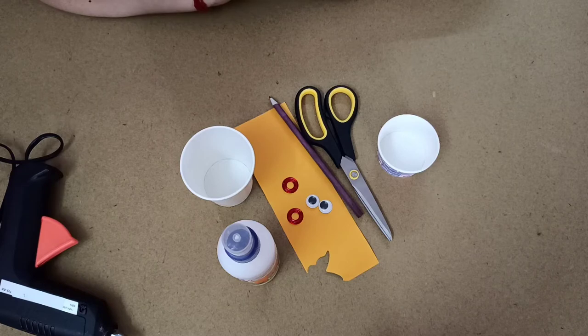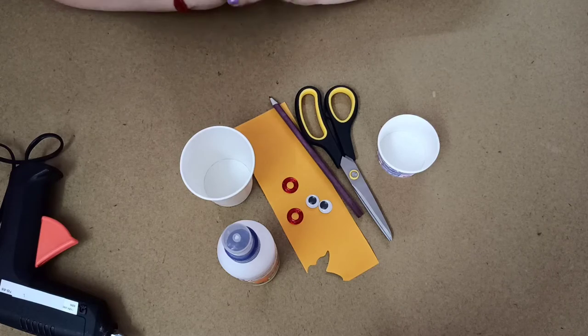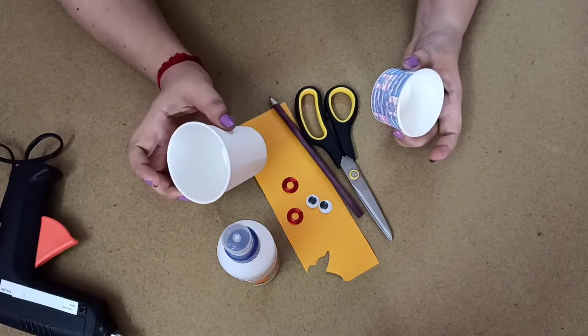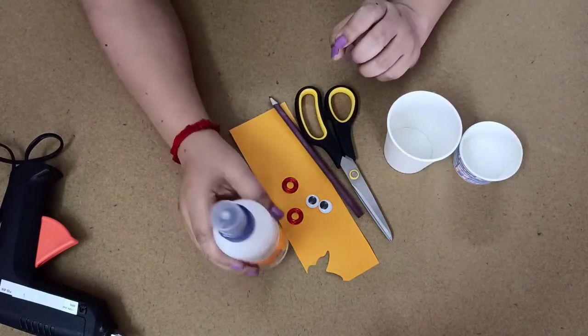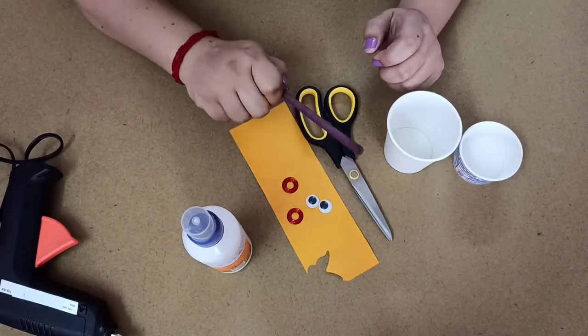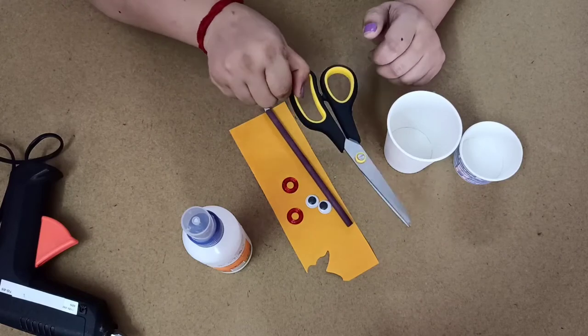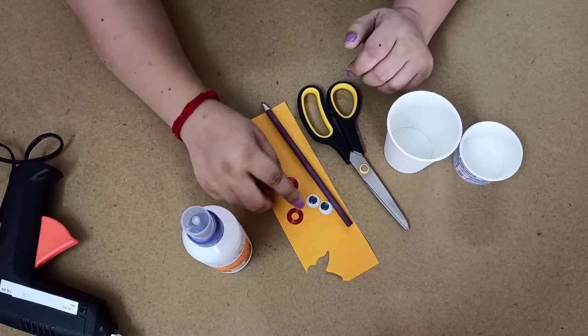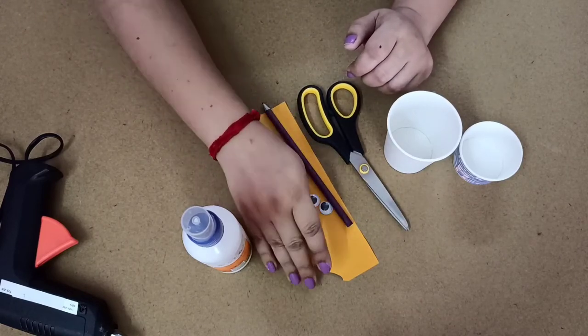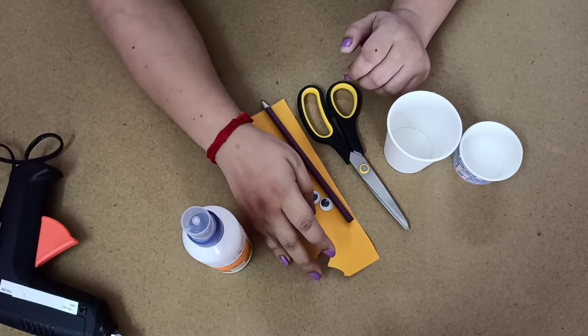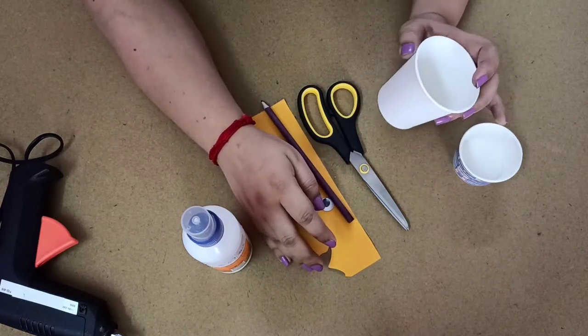To make paper cup scarecrow, I am taking paper cup, one small size paper cup, glue, pencil, scissors, googly eyes, decorative stone and orange color paper. So let's start it.